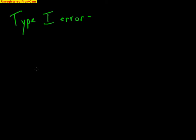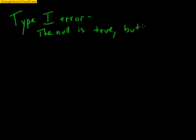In a Type I error, it's very specific: the null hypothesis is true, but the error is that we reject it. If a null hypothesis is true, we should fail to reject it — meaning we should keep it.